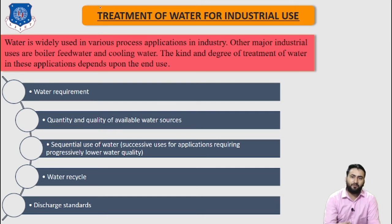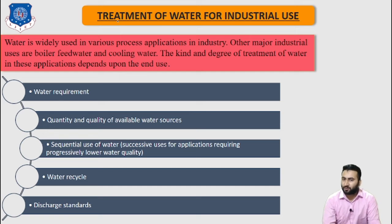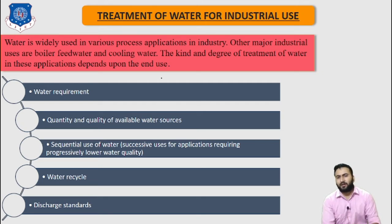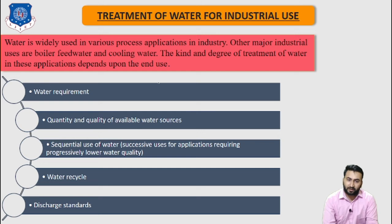Normally, if we need water for cooling purposes, we need to only remove corrosive material. But for boiler feed water, we need to remove scale formation, and water used in food processing must be free from bacteria and toxic substances. Improper treatment of water for industrial use can cause problems such as corrosion, scale formation, reduced heat transfer in heat exchangers, reduced water flow, and product contamination. These effects can reduce equipment performance or cause equipment failure, increasing energy costs and pumping costs.